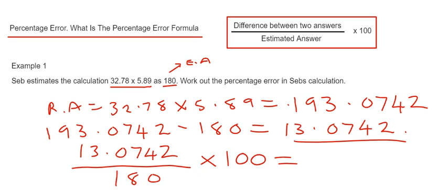You should get an answer of 7.26%—that's rounded off to two decimal places. That is the percentage error in Seb's calculation. Hope you liked the video. Thanks for watching, see you next time.